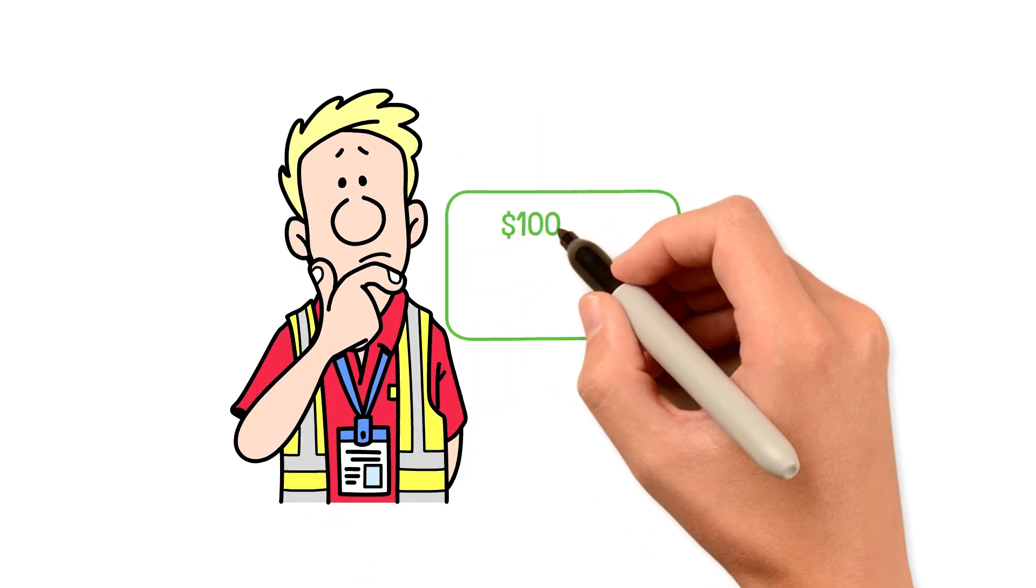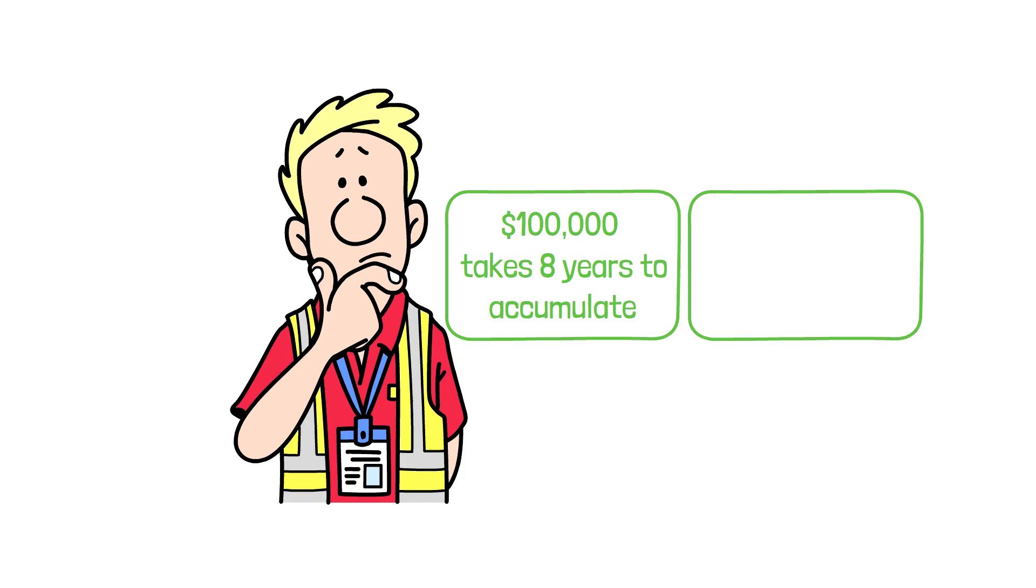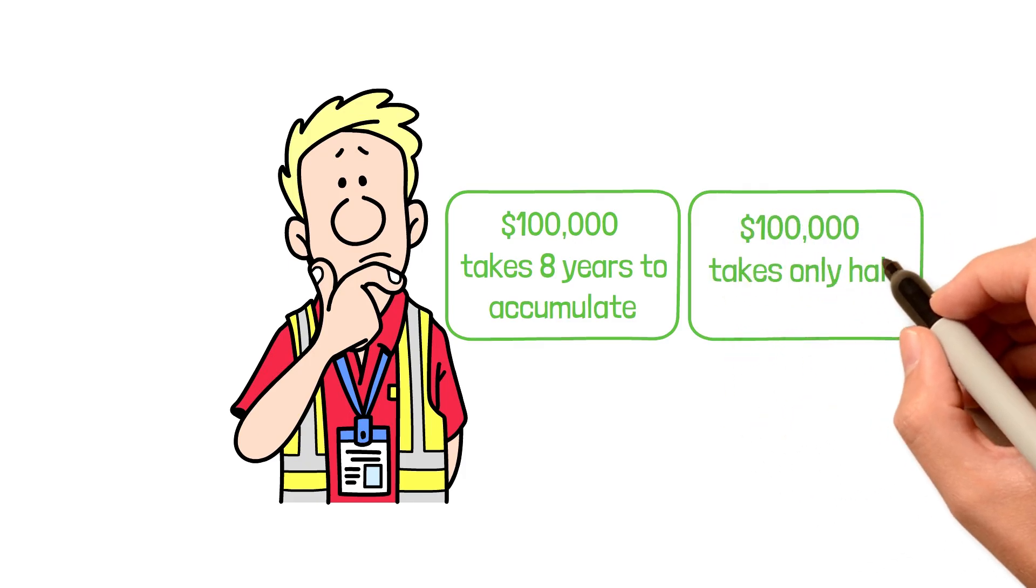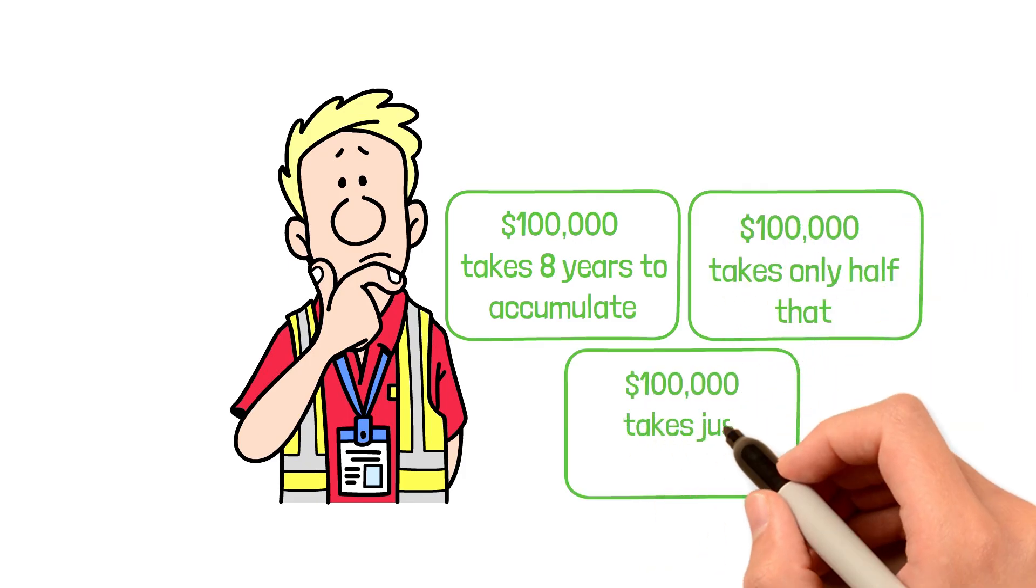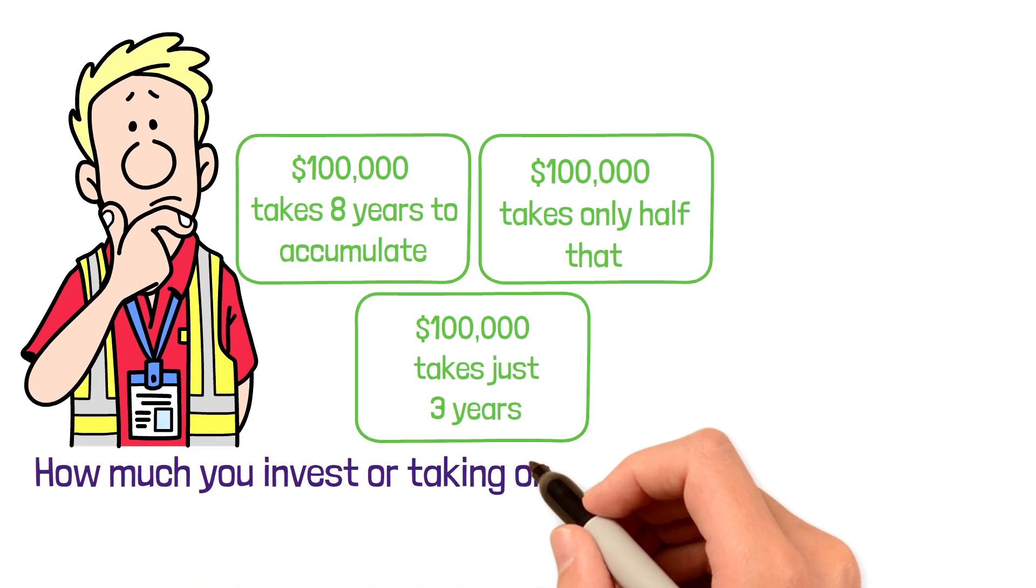What if someone told you that your first $100,000 takes 8 years to accumulate, but your second $100,000 takes only half that, while your third takes just 3 years, without you changing how much you invest or taking on more risk?